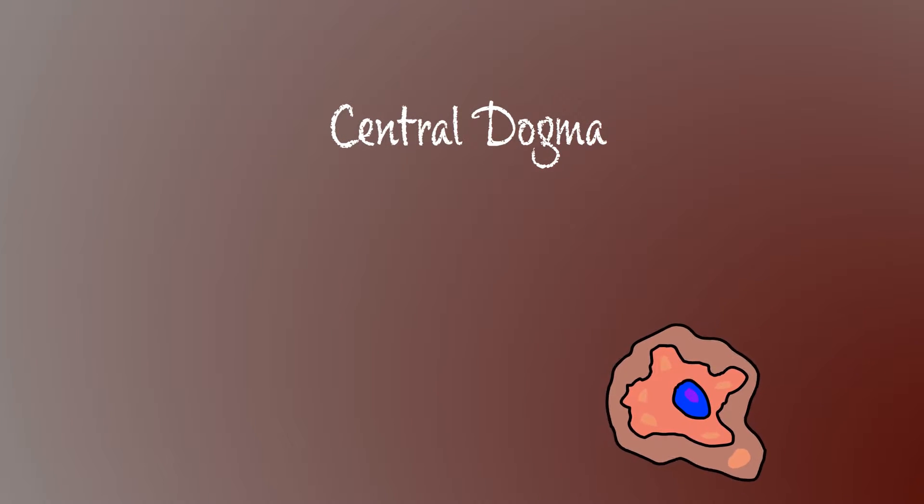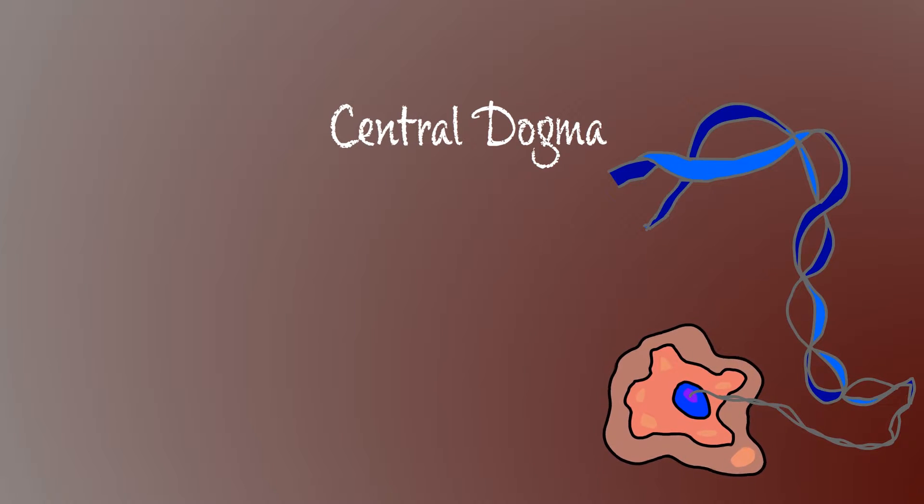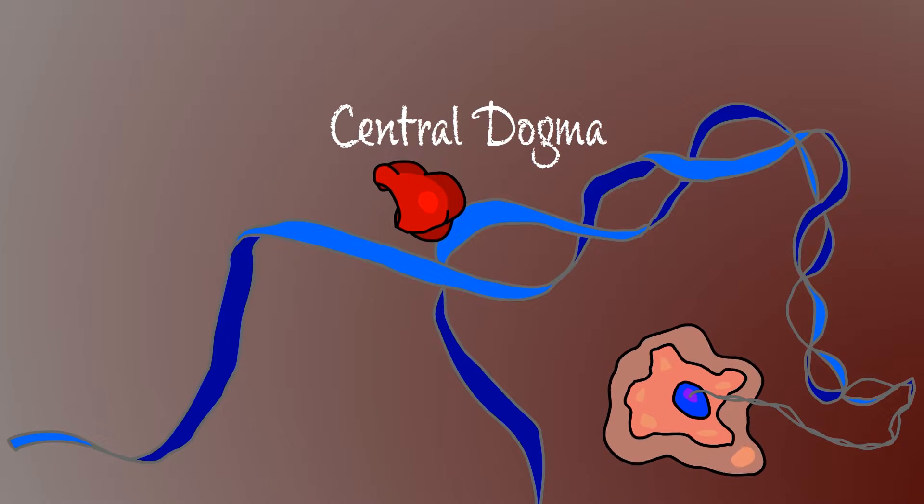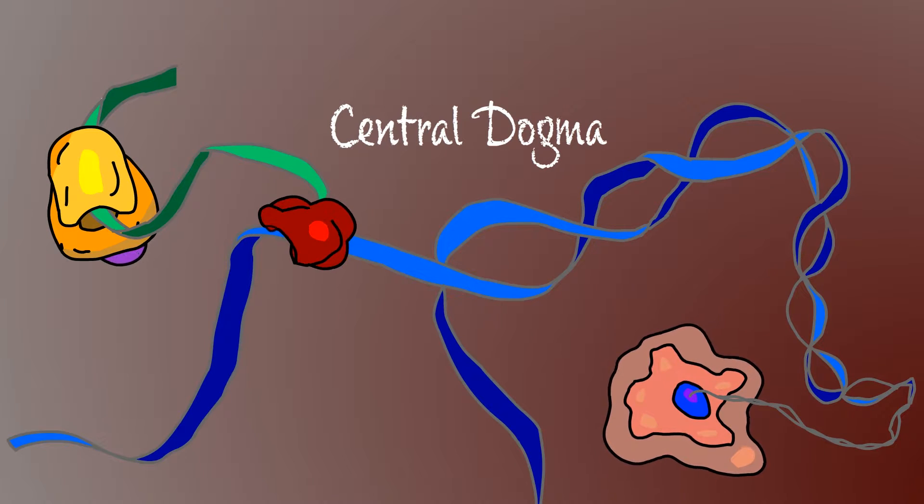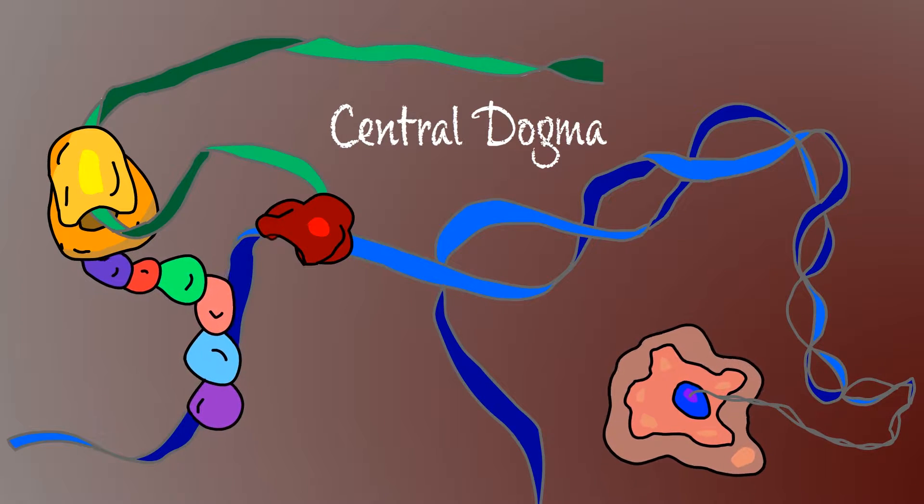To understand why RNA is important, let's look at something scientists call the central dogma. Every cell in every organism essentially works the same way. It all starts with a DNA blueprint that is transcribed into messenger RNA. The messenger RNA is translated into proteins, and the proteins are the workhorses to keep our cells and our bodies functioning.